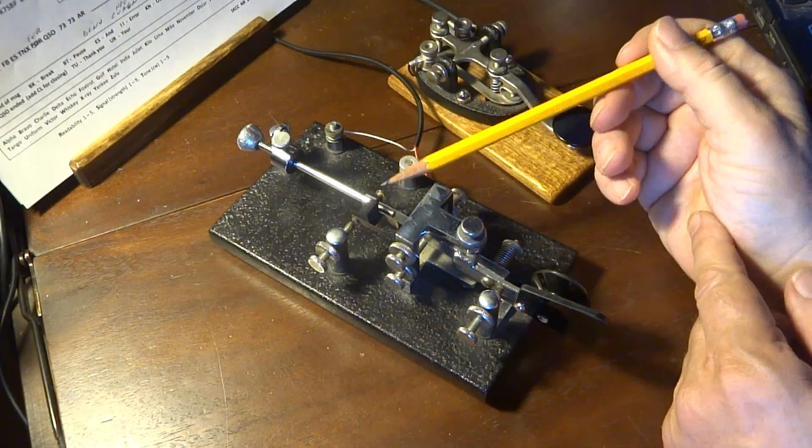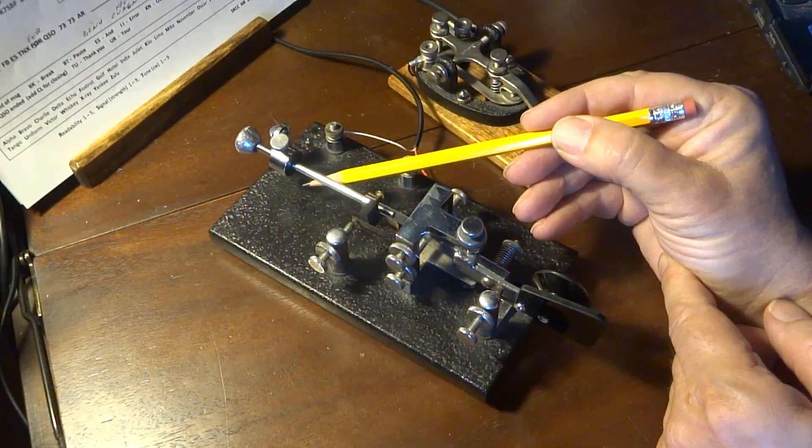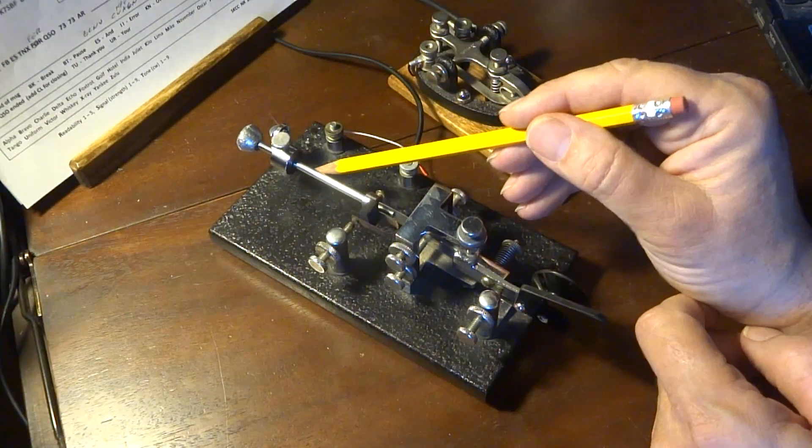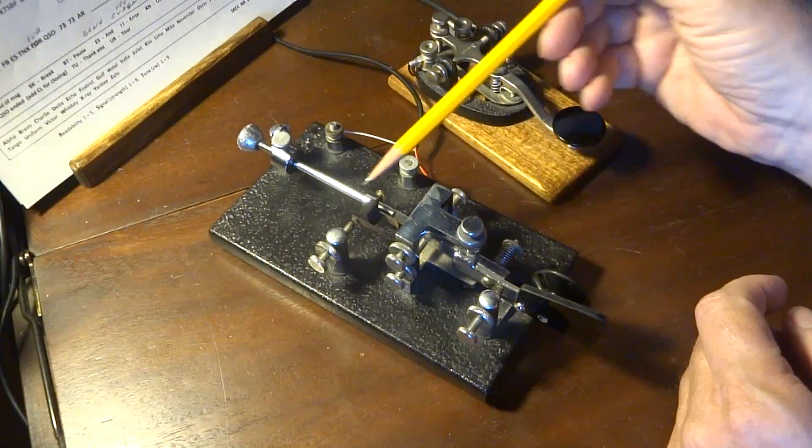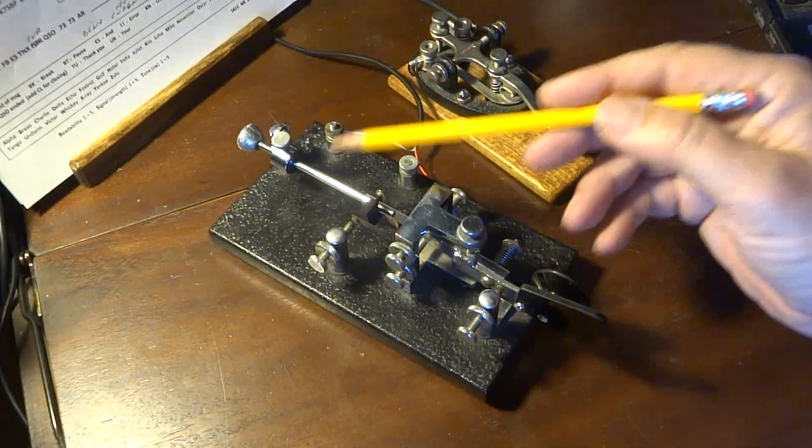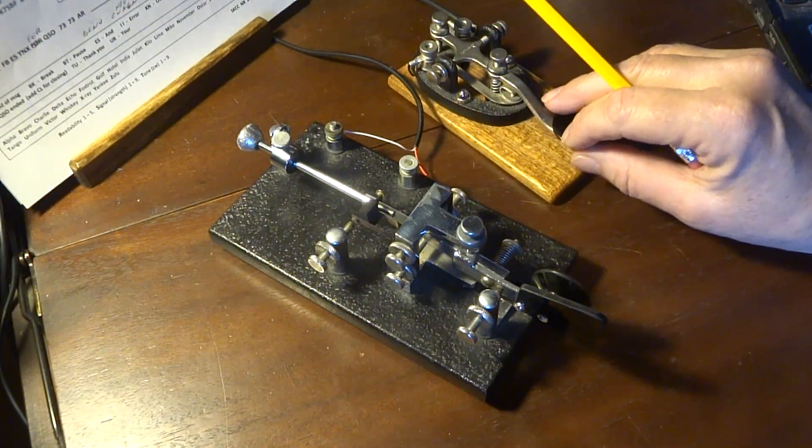And so this part of the key here is basically that it's like a pendulum that's on a piece of spring metal. And you have a weight that you slide in and out, which alters the speed. And these were set up to be way faster than a straight key like this.